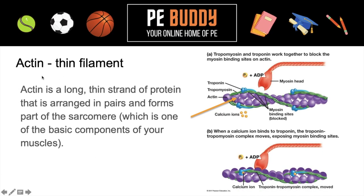So actin — these are our thin filaments. These are long, thin strands of protein arranged in pairs, and they form part of the sarcomere. In this diagram here, again in purple, we have our actin.